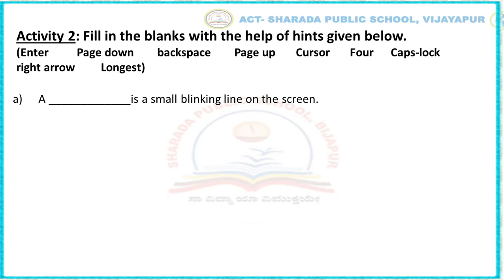First one: a blank is a small blinking line on the screen. Children, can you guess the answer? CURSOR? Yes, it is CURSOR. A CURSOR is a small blinking line on the screen.